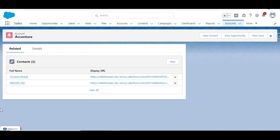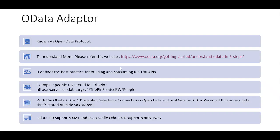In the demo we've seen how to create Account and Contact external objects and establish a relationship between them using the Cross-Org adapter. Now we move to the OData adapter, also known as the Open Data Protocol. If you want to learn more about it, there's a website odata.org. There are two types of OData adapter: 2.0 supports both XML and JSON, while 4.0 supports only JSON.